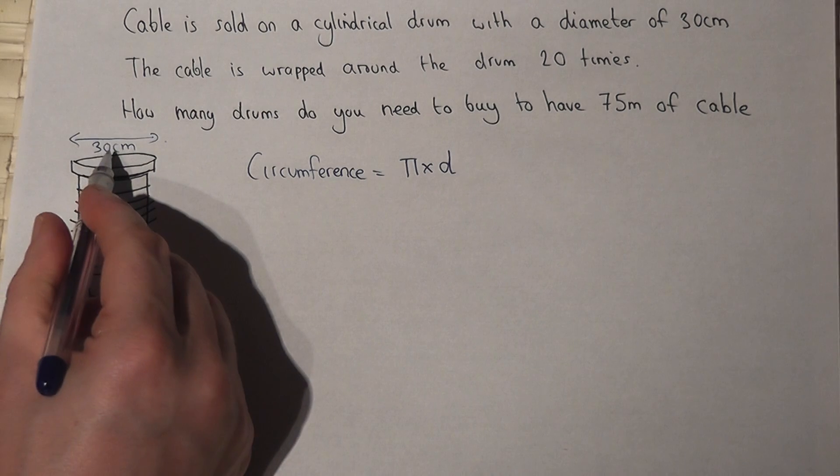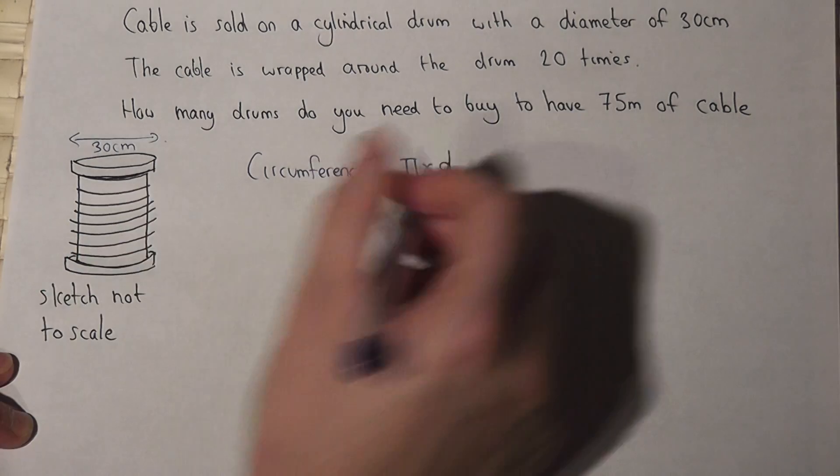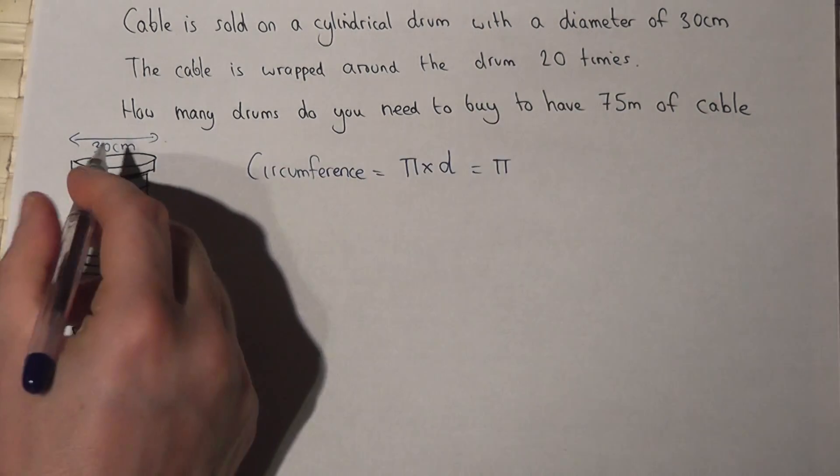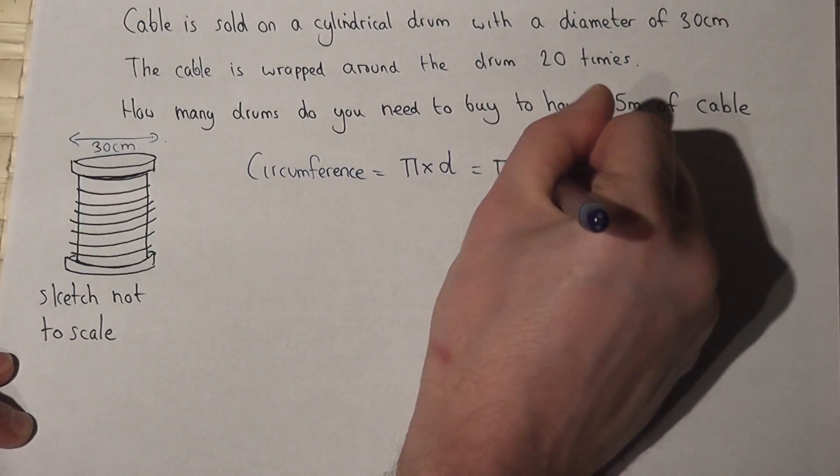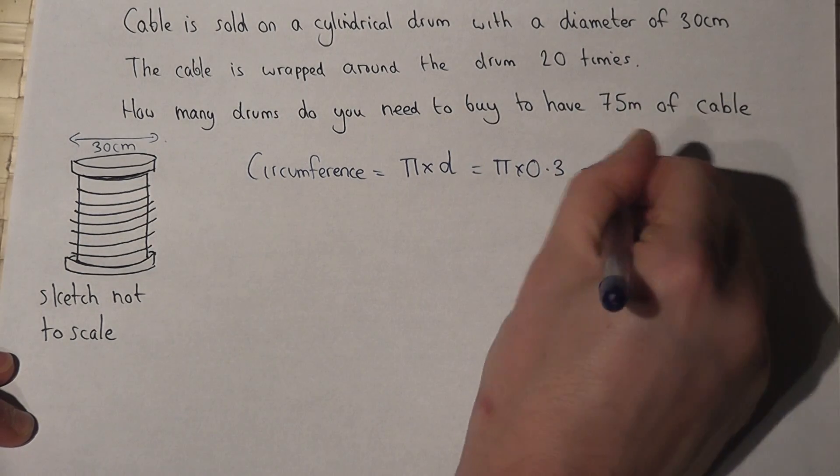Now that's in centimeters, this is in meters, so I'll work out one circumference by doing pi times not 30 centimeters but 0.3 meters. So this is 0.3 pi in terms of pi.